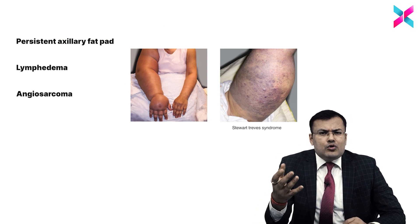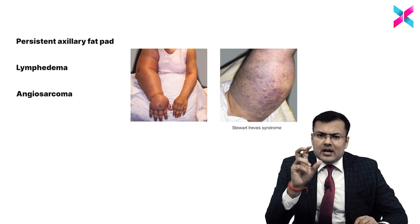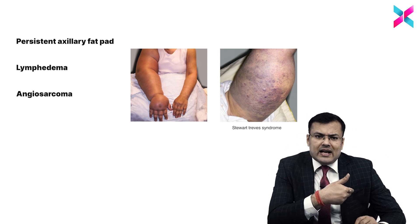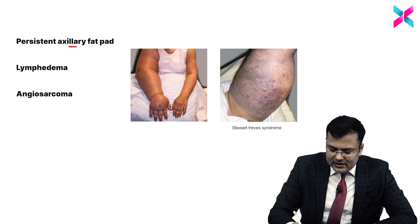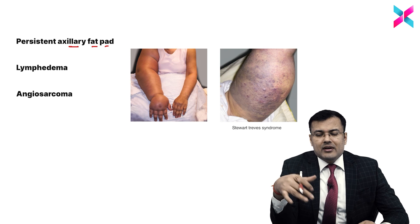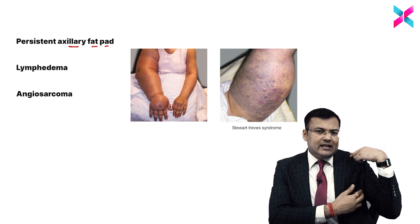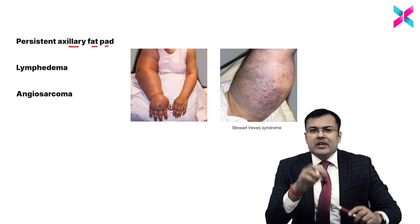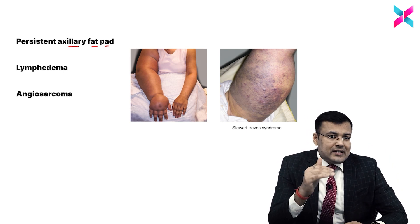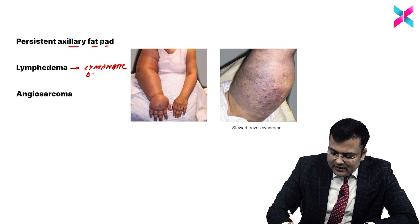Some patients who are obese — and obesity is a risk factor for breast cancer — are having too much fat in the axilla. If you remove the breast but a little amount of fat is left in the axilla, there is a persistent axillary fat pad. Also, after mastectomy, many females develop edema because there is lymphatic disruption due to axillary lymph node dissection, leading to lymphedema.